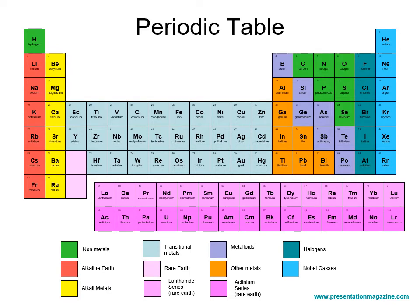The periodic table shows all currently known elements. The electrical properties of an element are determined by the number of electrons in the valence shell — how many electrons are available to do something in the outermost shell. Let's look at two examples: carbon, with atomic number 6, and copper, with atomic number 29. The atomic number is based on the number of protons in the nucleus, so carbon has 6 protons, and for a balanced atom, also 6 electrons.